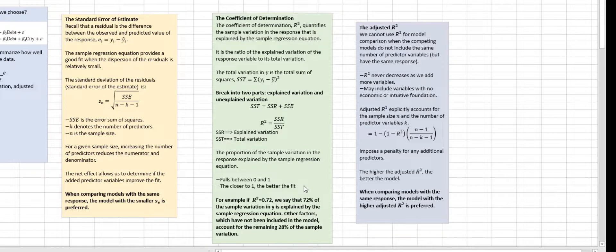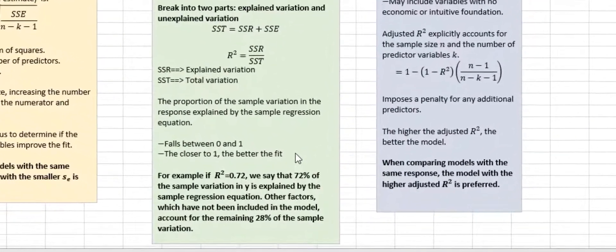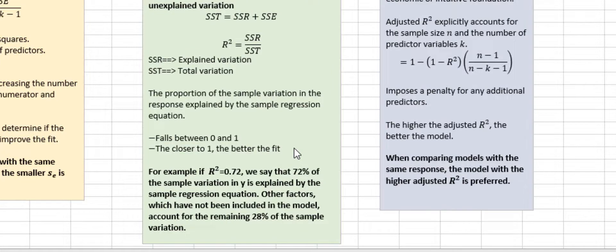The proportion of the sample variation in response explained by the sample regression equation falls between 0 and 1, and the closer to 1, the better the fit. You may be a little bit confused about too much technical details, but think about it this way. For example, if your R square is 0.72, we say that 72% of sample variation in Y is explained by the sample regression equation.